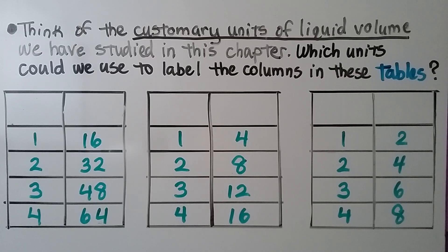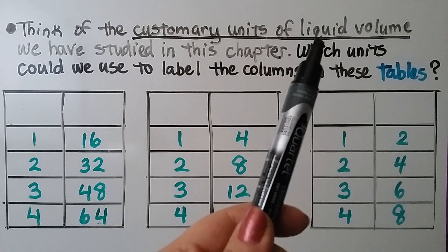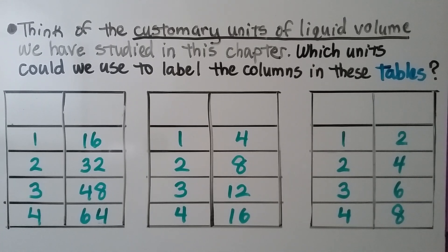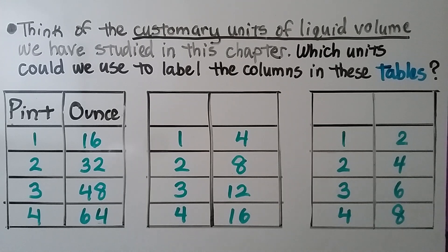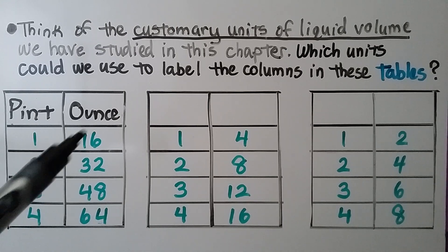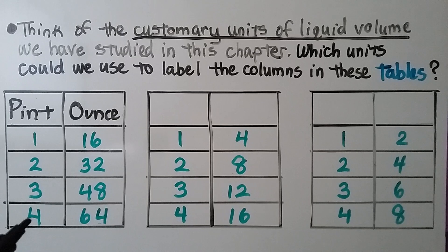Think of the customary units of liquid volume we've studied — which units could label these tables? For 1 and 16, pint and ounce is correct: one pint equals 16 ounces. That means 2 pints is 32 ounces, 3 pints is 48, and 4 pints is 64 ounces.